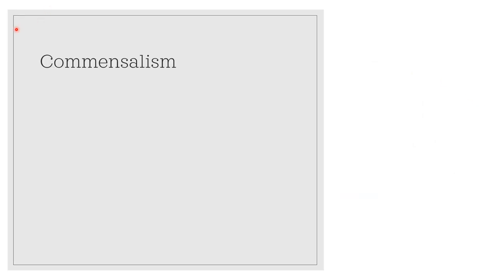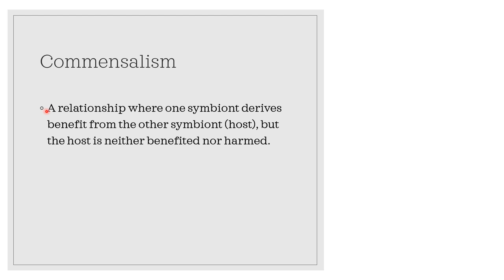Another type of interaction between organisms is commensalism. This is a relationship where one symbiont derives its benefit from the other symbiont, the host, but the host is neither benefited nor harmed. This relationship can either be obligatory or facultative — obligatory when the host is required for the survival of the symbiont, and facultative when the host is not required for their survival.